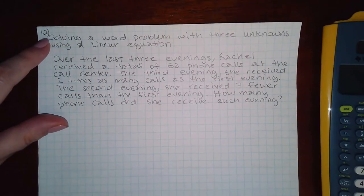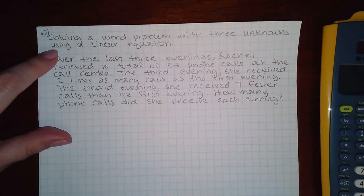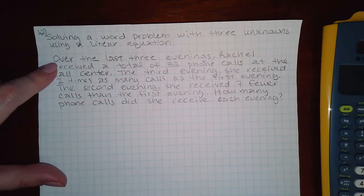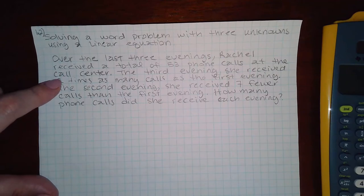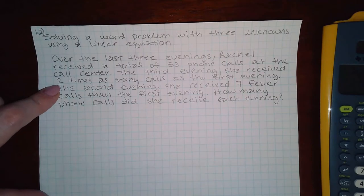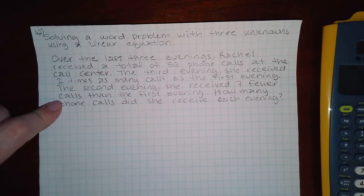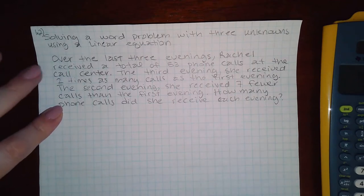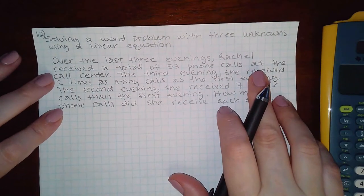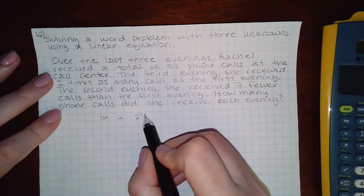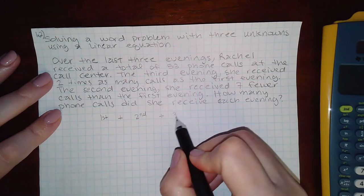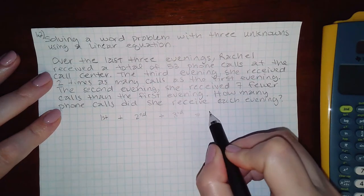Okay, this is 1.2, solving a word problem with three unknowns using a linear equation. The problem reads: Over the last three evenings, Rachel received a total of 53 phone calls at the call center. The third evening she received two times as many calls as the first evening. The second evening she received seven fewer calls than the first evening. How many phone calls did she receive? So the first sentence tells us that over the three nights, the first night plus the second night plus the third night will equal the 53 total phone calls.